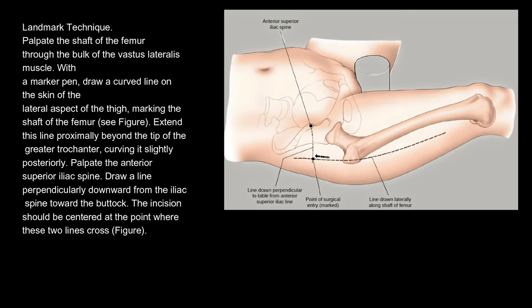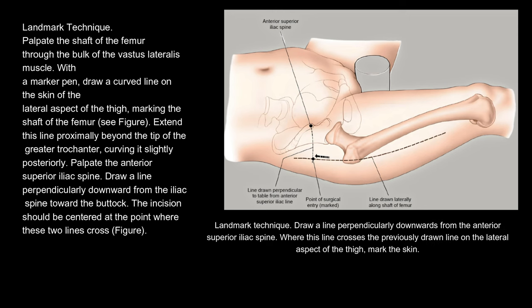Landmark technique. Palpate the shaft of the femur through the bulk of the vastus lateralis muscle. With a marker pen, draw a curved line on the skin of the lateral aspect of the thigh, marking the shaft of the femur. Extend this line proximally beyond the tip of the greater trochanter, curving it slightly posteriorly. Palpate the anterior superior iliac spine. Draw a line perpendicularly downward from the iliac spine toward the buttock. The incision should be centered at the point where these two lines cross. Draw a line perpendicularly downwards from the anterior superior iliac spine; where this line crosses the previously drawn line on the lateral aspect of the thigh, mark the skin.